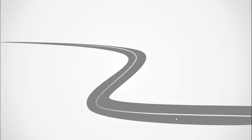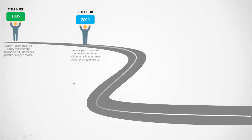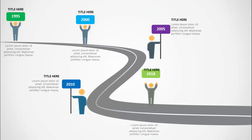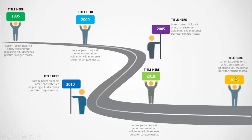In today's tutorial I'm going to show you how to create a six-options timeline slide in PowerPoint. When I click, you can see the road appears, then the first year comes as if the icon is holding it. You can add a title and detailed text at the bottom. Each click reveals the next year: 2000, 2005, 2010, 2018 — with boxes in different colors. For 2025, depending on your requirement, you can increase or decrease these options.